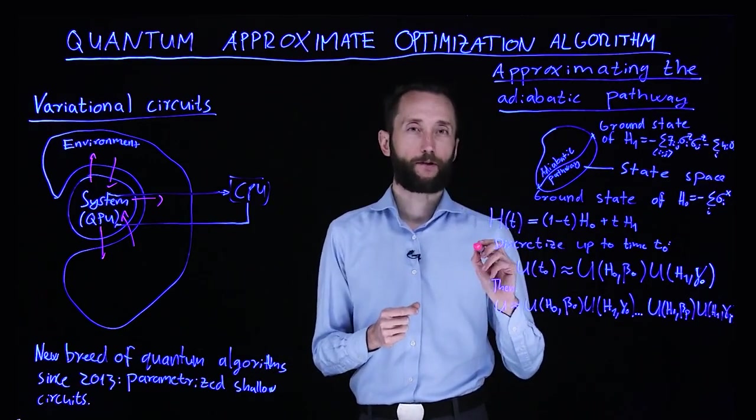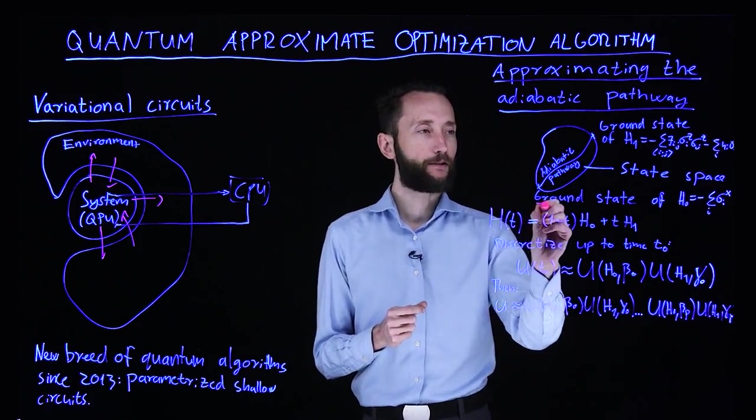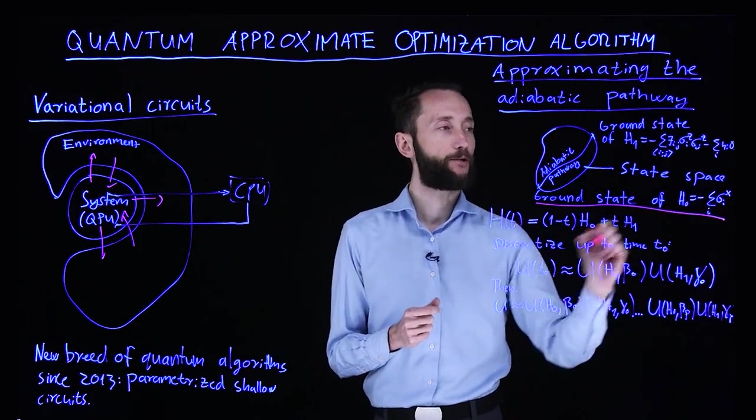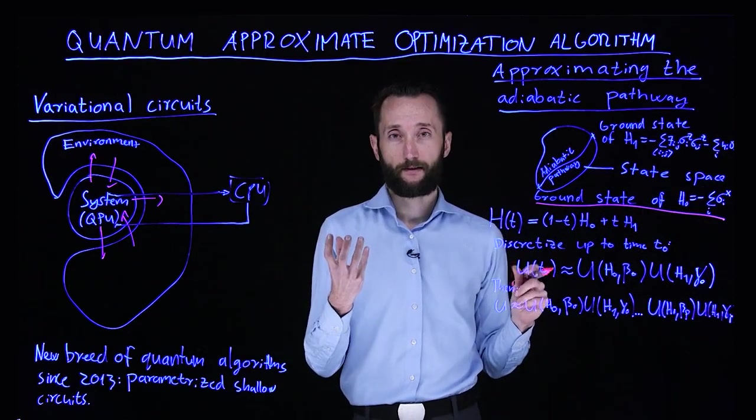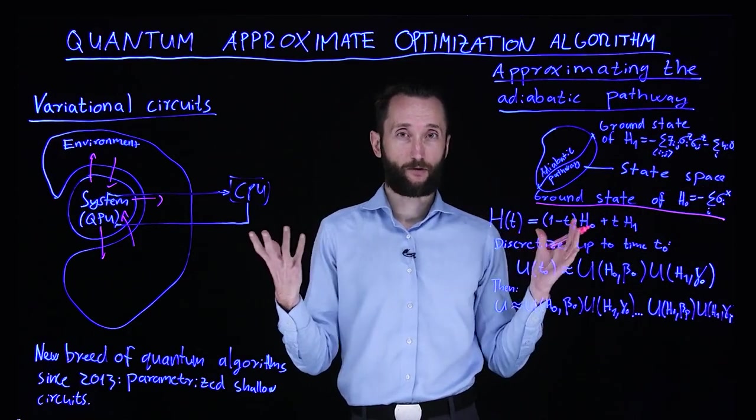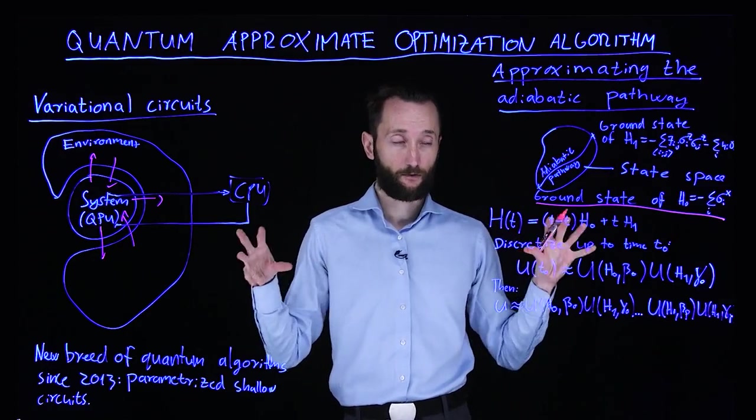Remember that what we do here is calculate the ground state of some simple Hamiltonian, say just the sigma x interaction on every single site. The ground state of this is just going to be the equal superposition of all states.